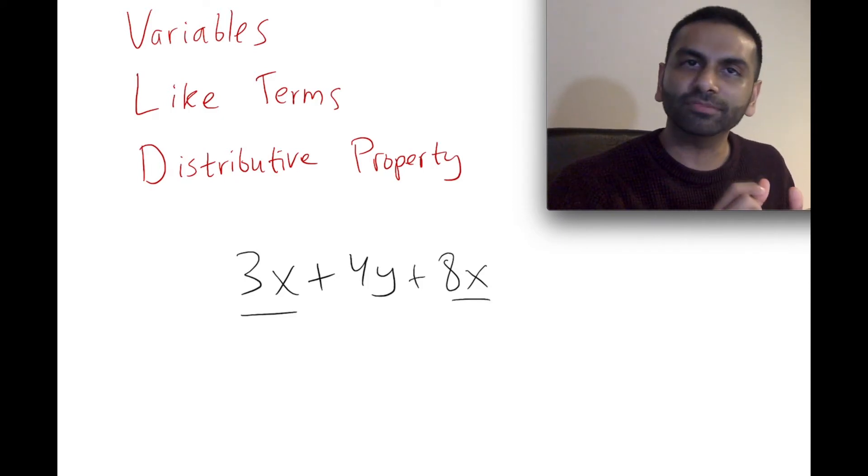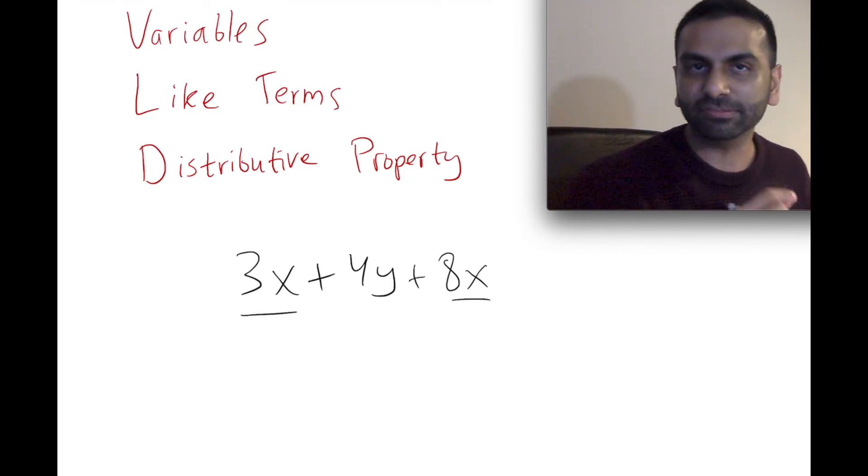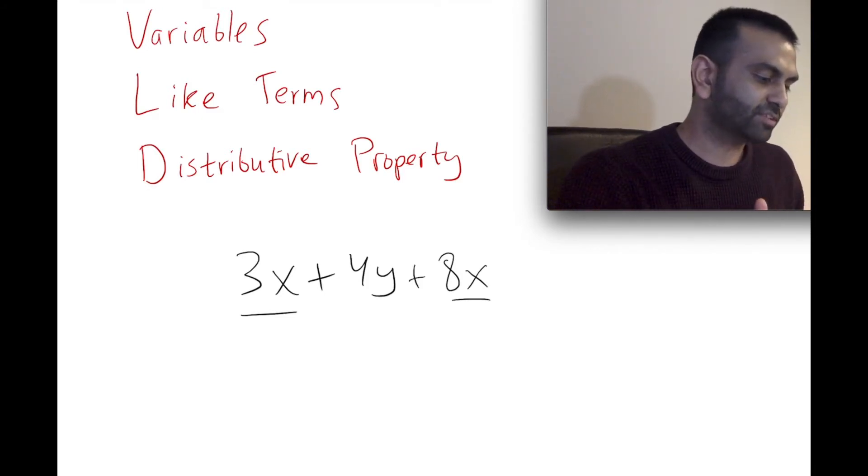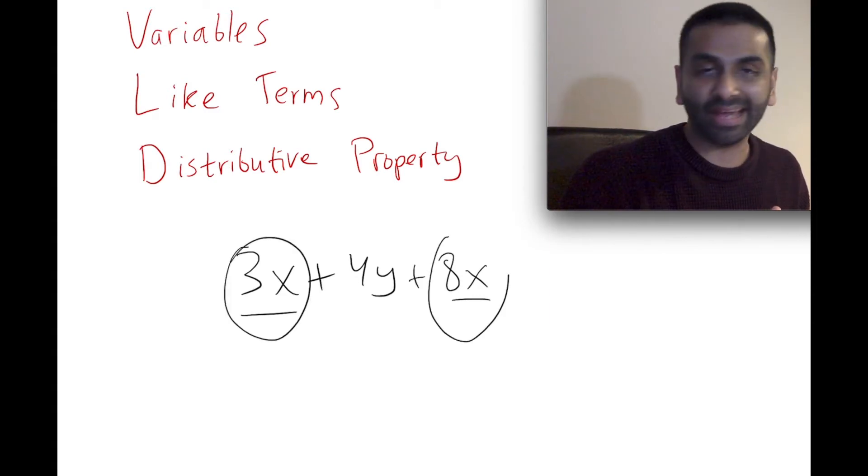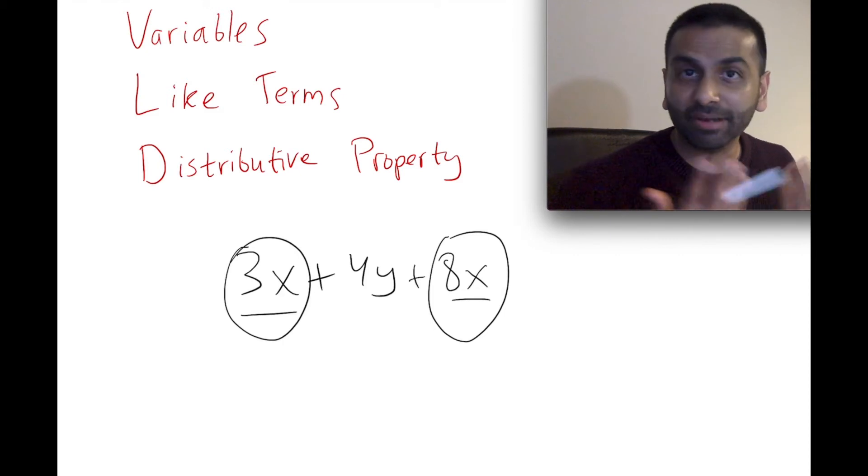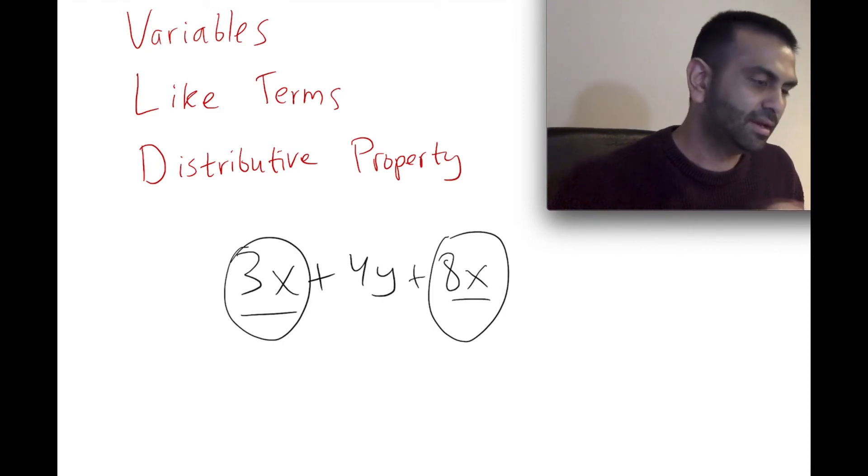Like terms are terms that have the same variable and the same exponent. So here, the 3X and the 8X both have the same variable, and that variable X is to the same exponent 1. X to the first power is just X, so what you do is you add them.